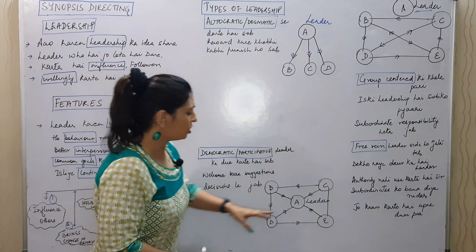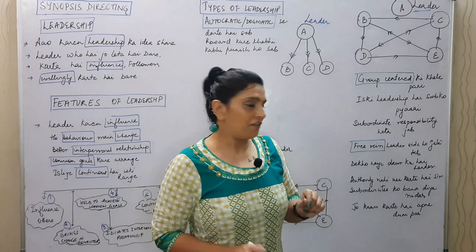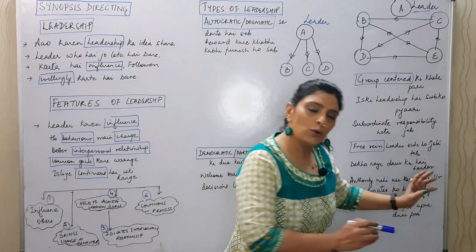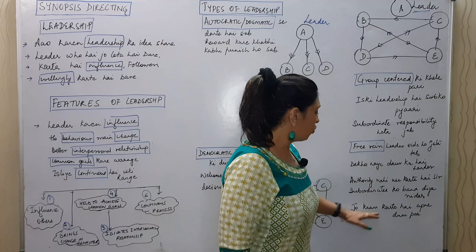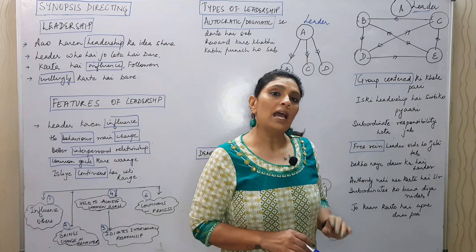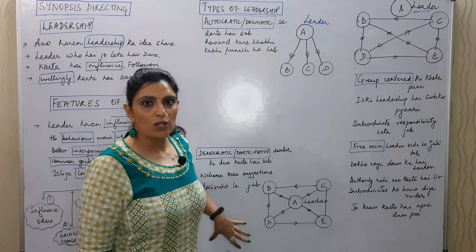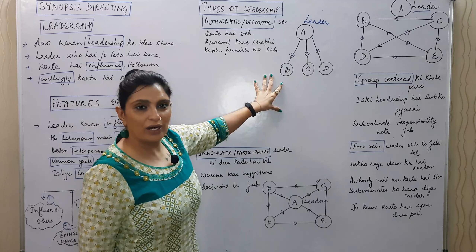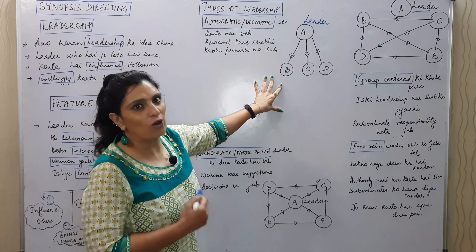The democratic leader welcomes suggestions; he is the leader and the rest are followers. The third type is free reign or laissez-faire leadership — it is group-centered, and the subordinate takes responsibility while the free reign leader steps aside. For example, Warren Buffet is a free reign leader; Subhas Chandra Bose or Nelson Mandela are examples of democratic leaders; Hitler is typically given as the autocratic or dogmatic leader. These kinds of leaders are found in organizations too.